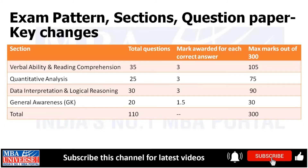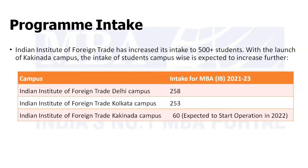The test pattern is: 4 sections, 110 questions, 300 marks, with variable marking. For GK, there is 1.5 marks per correct answer. The intake campuses are Delhi, Kolkata, and Kakinada. 500-plus students will get admission and around 50,000-plus will apply.